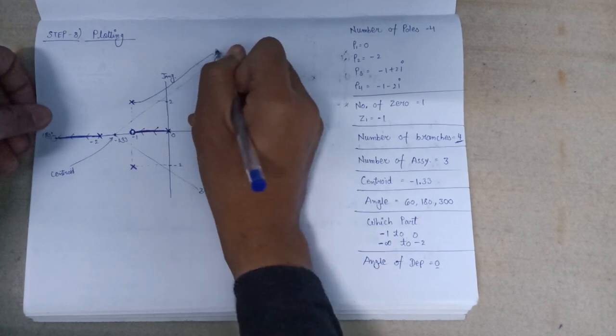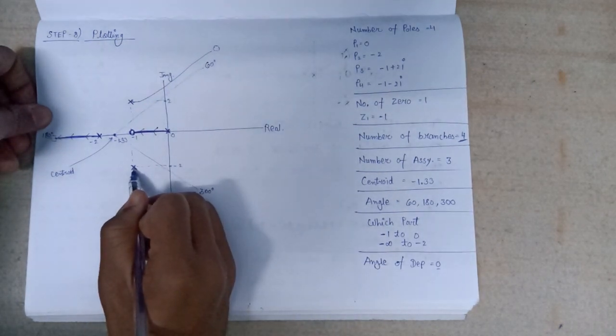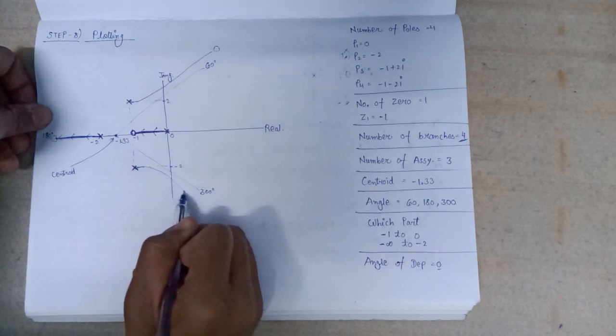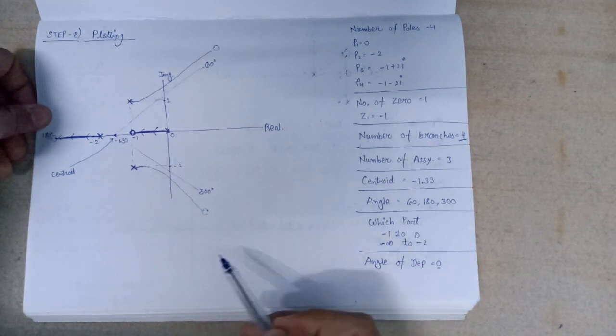And also from here, another branch of the root locus will emerge and go to the imaginary zero. So this is the complete plot.